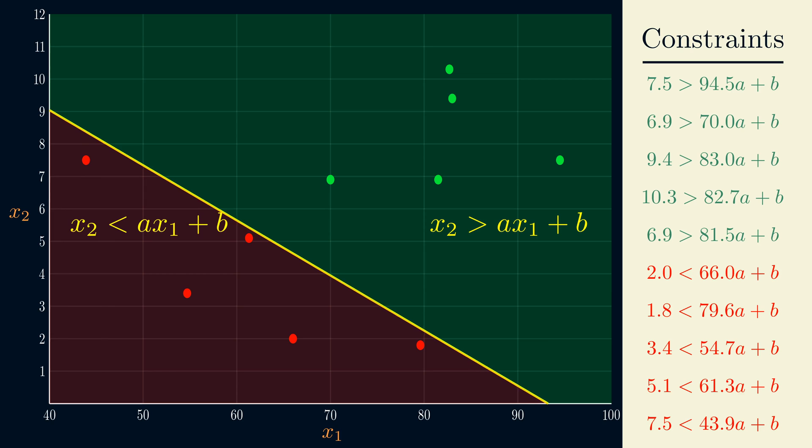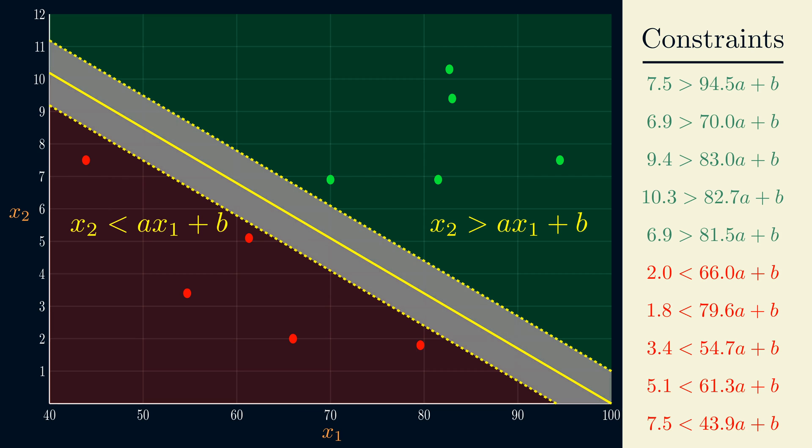We ideally want our line to lie somewhere in the middle. To do this, the idea is to add some kind of a buffer, and modify our constraints so that our current data doesn't fall inside this buffer.